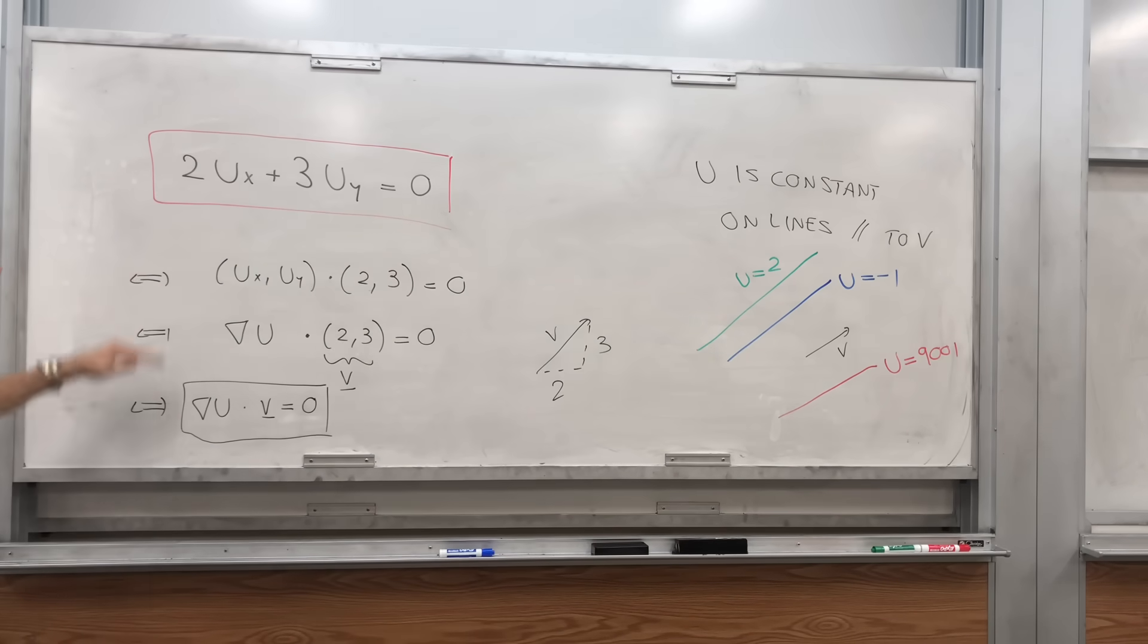Because notice this is equivalent. u being constant on a line is equivalent to solving the PDE. It's pretty amazing, because you started with this algebraic thing, and you ended up with this geometric interpretation.